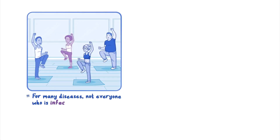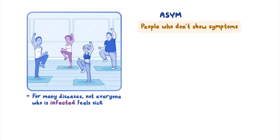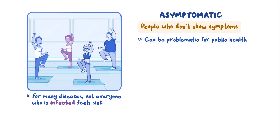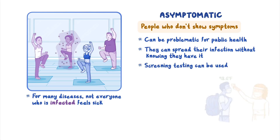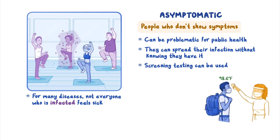For many diseases, not everyone who is infected feels sick. People who don't show symptoms are called asymptomatic. Asymptomatic people can be problematic for public health because they can spread their infection without knowing they have it. Screening testing can be used to look for people who are infected but asymptomatic.